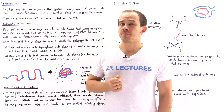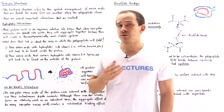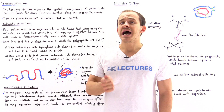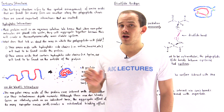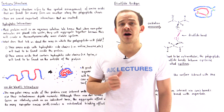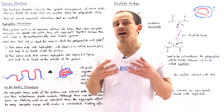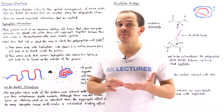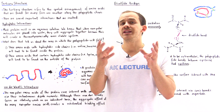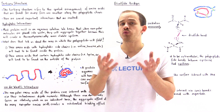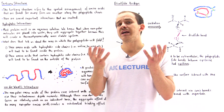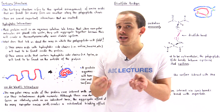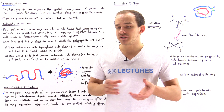The tertiary structure of a polypeptide refers to the spatial arrangement of the amino acids that are found far away from one another in that polypeptide chain. Said another way, the tertiary structure of the polypeptide is simply the three-dimensional arrangement of atoms — the three-dimensional shape that the polypeptide chain will take within its local environment.